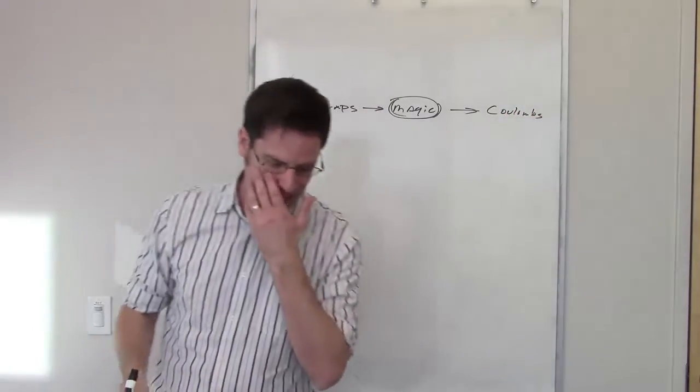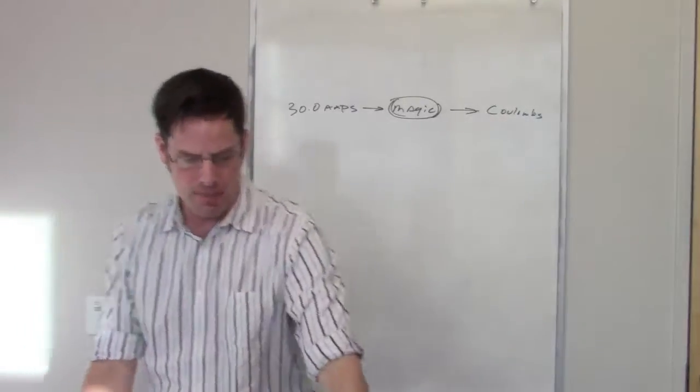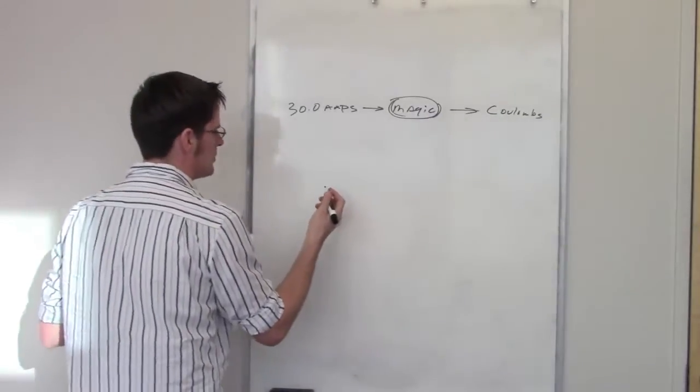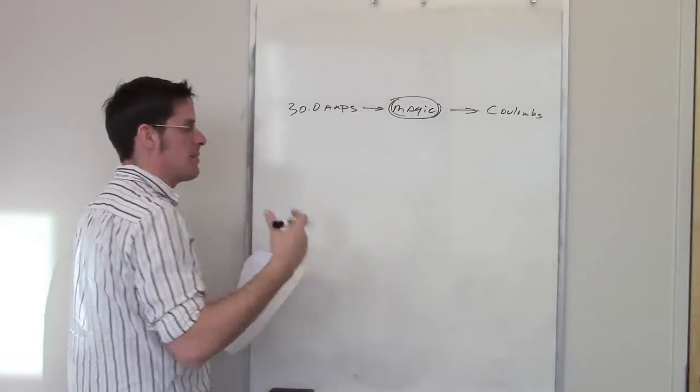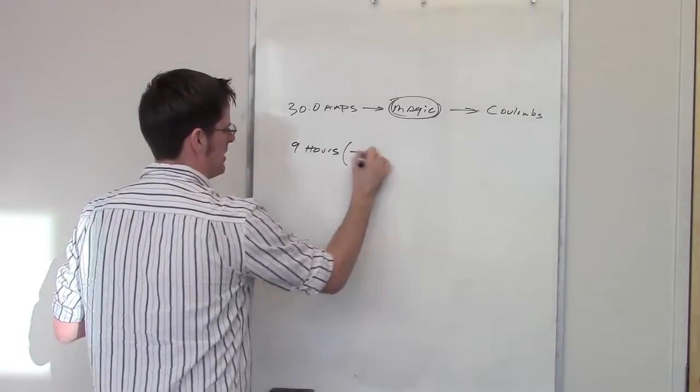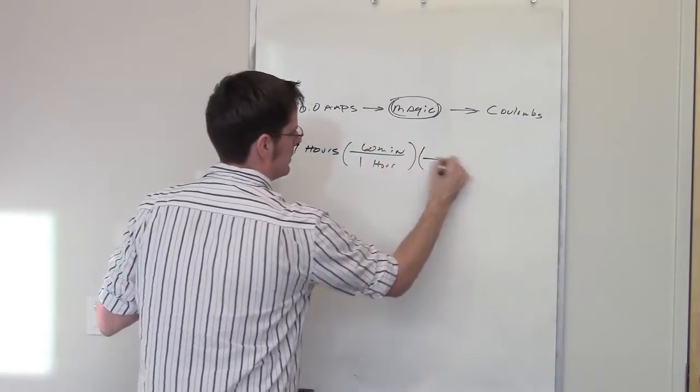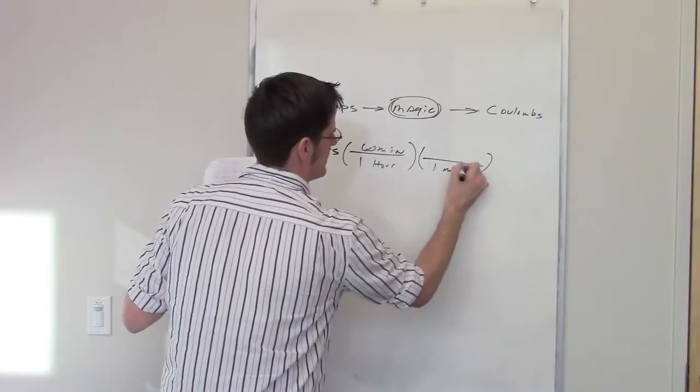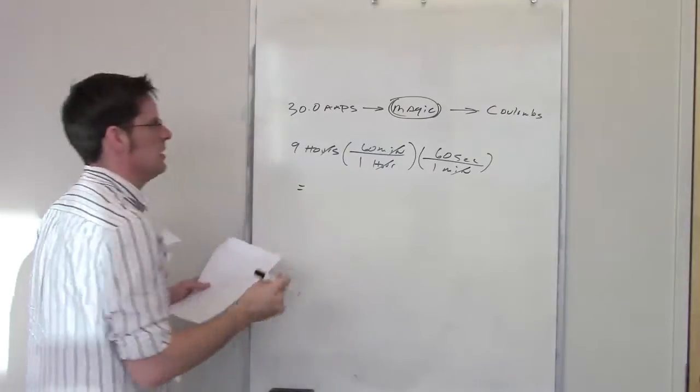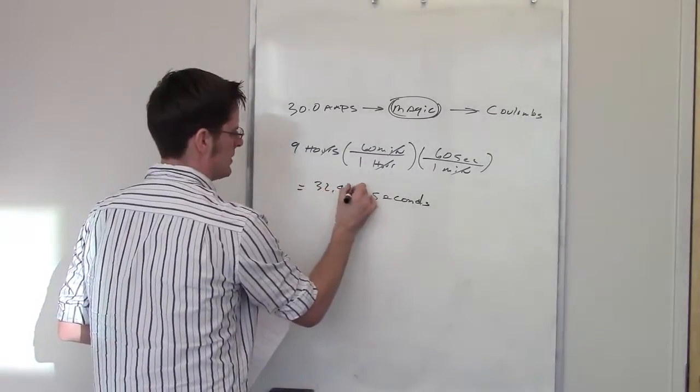We have to keep in mind that amperage times seconds equals Coulombs. It tells me that in this problem that I've been running this for 9 hours. So let's begin by seeing if we can figure out how many seconds 9 hours is. Well, I've got 9 hours, and you probably know that 1 hour contains 60 minutes, and 1 minute contains 60 seconds. So if I throw that in there, I end up getting a certain number of actual seconds, and that number comes out to be 32,400 seconds.